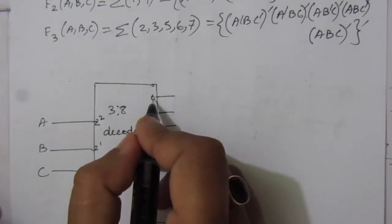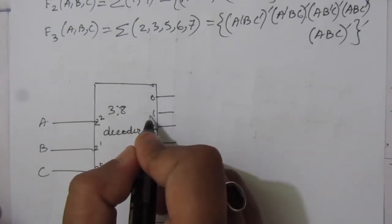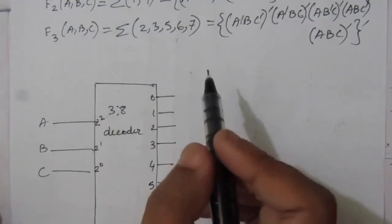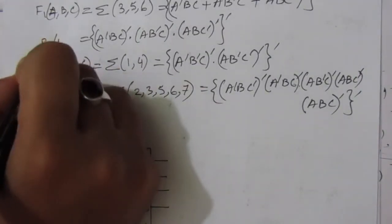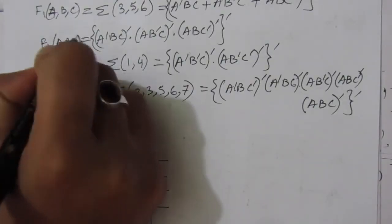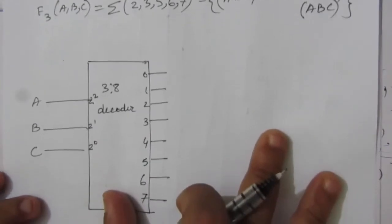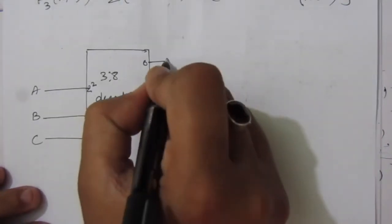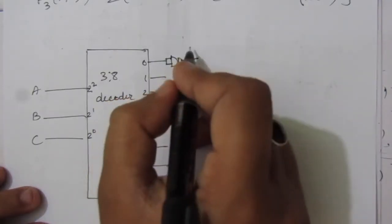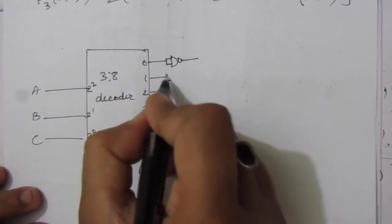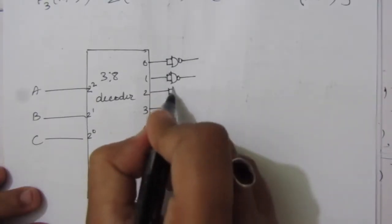Output 0 of the decoder represents A̅B̅C̅. Looking at each of the three functions, every minterm expression contains a complement, so we will use NAND gates — specifically single-input NAND gates acting as inverters — to get the complemented outputs from the decoder lines.